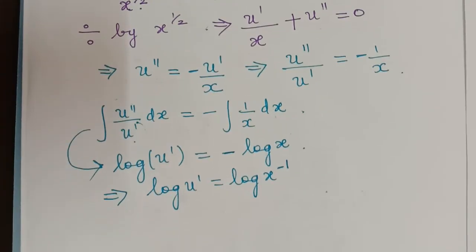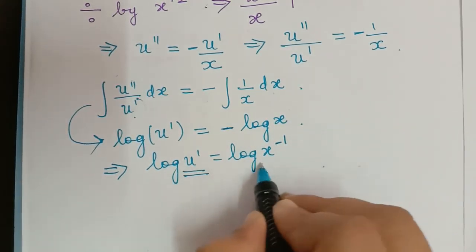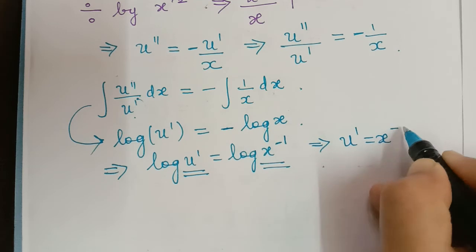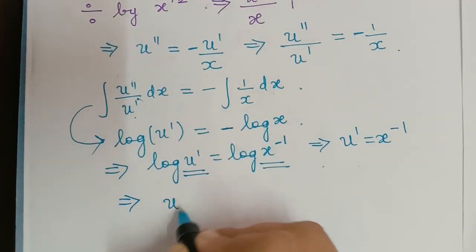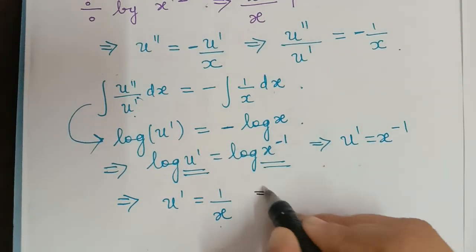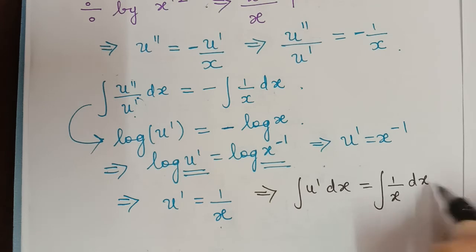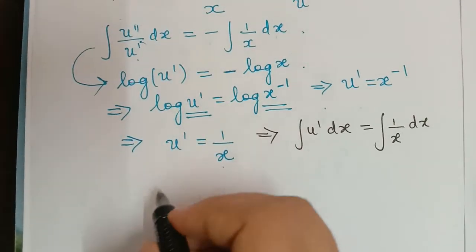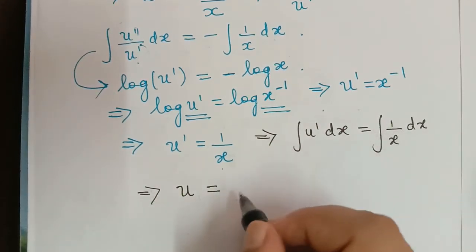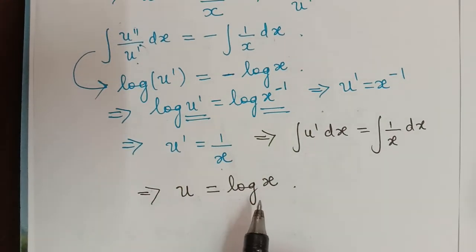Using logarithmic rules and comparing both sides, we get u' = x^(−1) = 1/x. Integrating again: ∫u' dx = ∫(1/x) dx, so u = log(x).